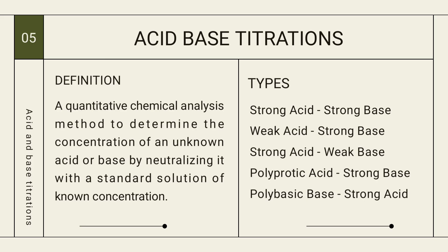The types of acid-base titrations are: strong acid and strong base, weak acid and strong base, weak base and strong acid, polyprotic acid and strong base, and polyprotic base and strong acid. A polyprotic acid donates many protons, and a polybasic base accepts many protons.